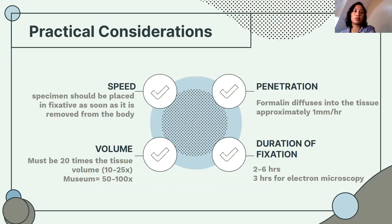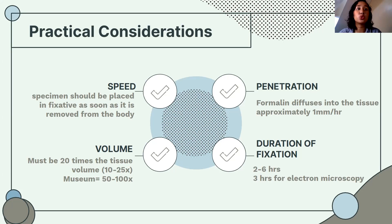Things to consider when fixing: Number one is speed — the specimen should be placed in a fixative as soon as it is removed from the body. Number two is volume — it's important that your fixative is affordable because depending on the size of your tissue, you will need a large volume.